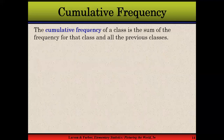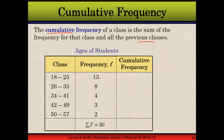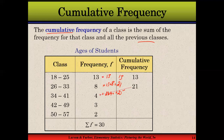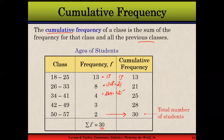The next concept is cumulative frequency. Cumulative means we keep adding up. The cumulative frequency of a class is the sum of the frequency for that class and all previous classes. In our example: the first class has 13; adding 8 gives 21; adding 4 gives 25; adding 3 gives 28; and adding 2 gives 30. The last class always equals the total number of observations — 30 — representing 100% of the data.